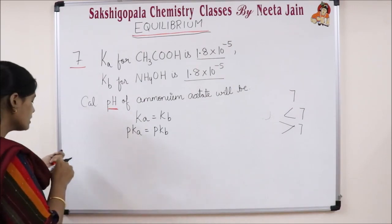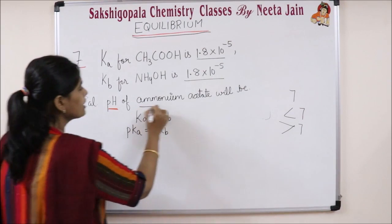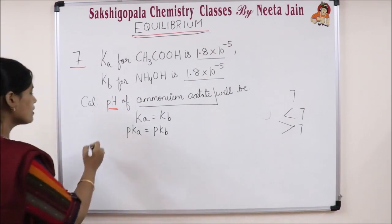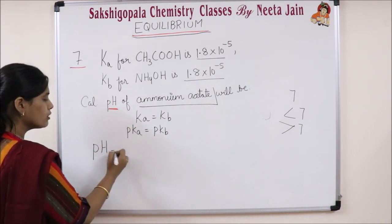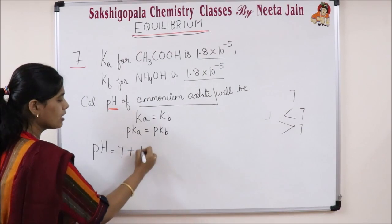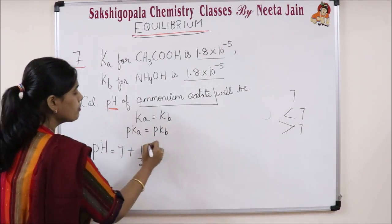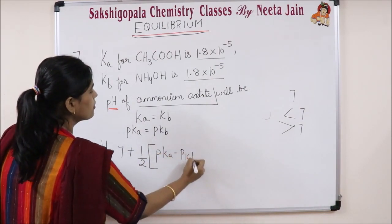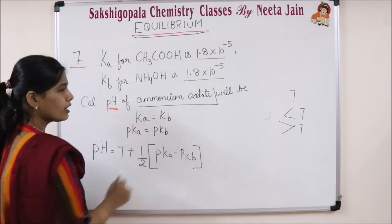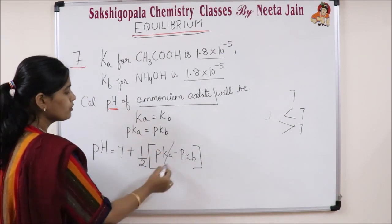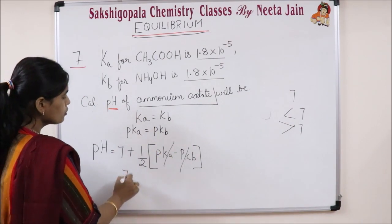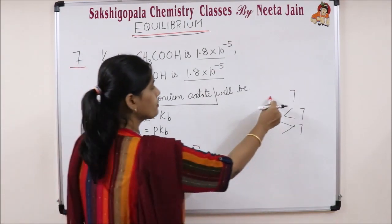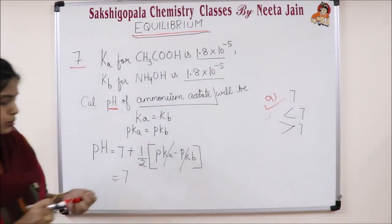Acid and base react with each other to form salt and water. To find the pH of ammonium acetate, we use the equation: pH = 7 + ½(pKa − pKb). Since pKa and pKb are equal, they cancel out and give zero. Therefore, the pH of the solution equals 7. The correct answer is option A: pH = 7.